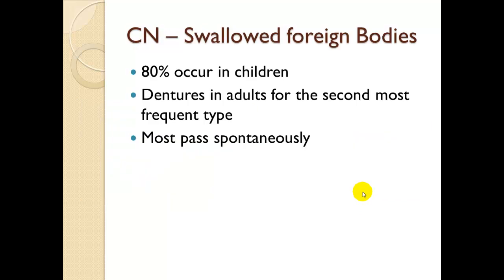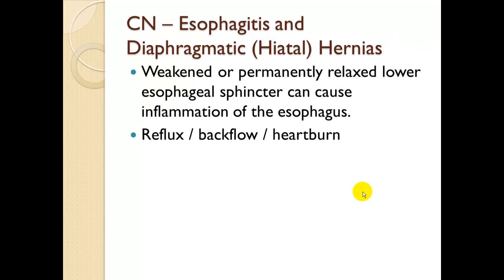Clinical notes. Swallowing foreign bodies: 80% occur in children; dentures are the second most frequent type in adults. Children, especially younger ones, are oral explorers and tend to put everything in their mouths. Most objects, as long as they're small enough, pass spontaneously. Clinical note on esophagitis and diaphragmatic or hiatal hernias: a weakened or permanently relaxed lower esophageal sphincter can cause inflammation of the esophagus from reflux — backflow of highly acidic gastric contents into the esophagus, which is not designed to handle that pH change.